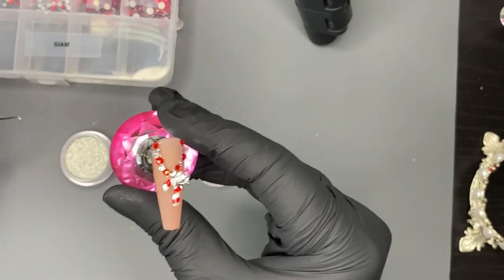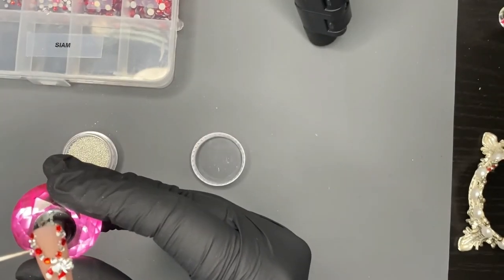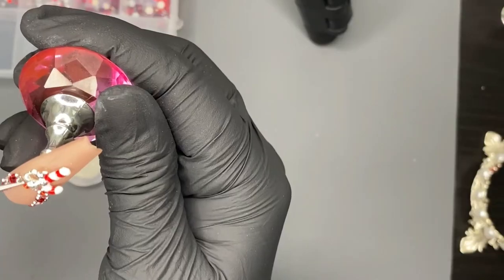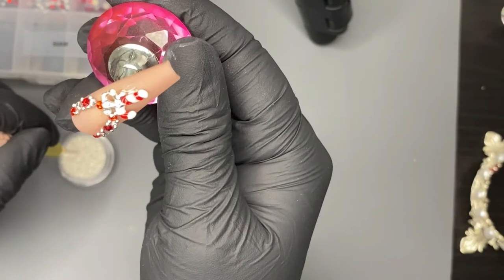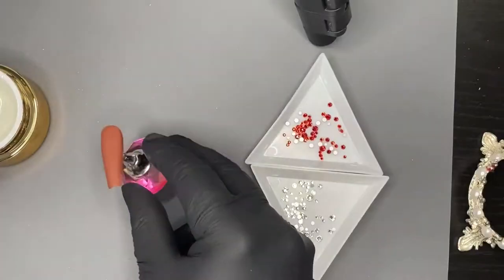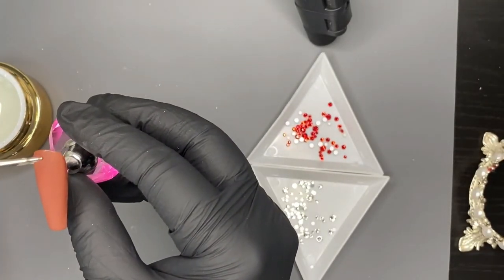Then we're adding in caviar beads. Caviar beads are the game changer when it comes to crystal placements I feel. If you have any excess glue, it helps fill it out and it just fills out and bulks up the design. Great thing about press-ons, you can rotate it however you want.